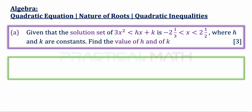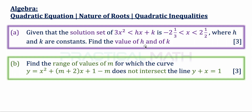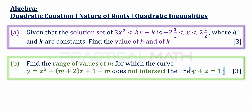In Part B of this question, find the range of values of m for which the curve y equals x squared plus bracket m plus 2 close bracket x plus 1 minus m does not intersect the straight line y plus x equals 1.